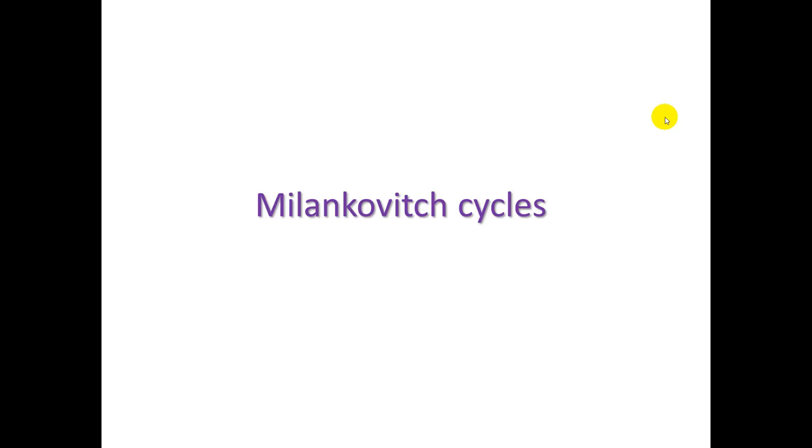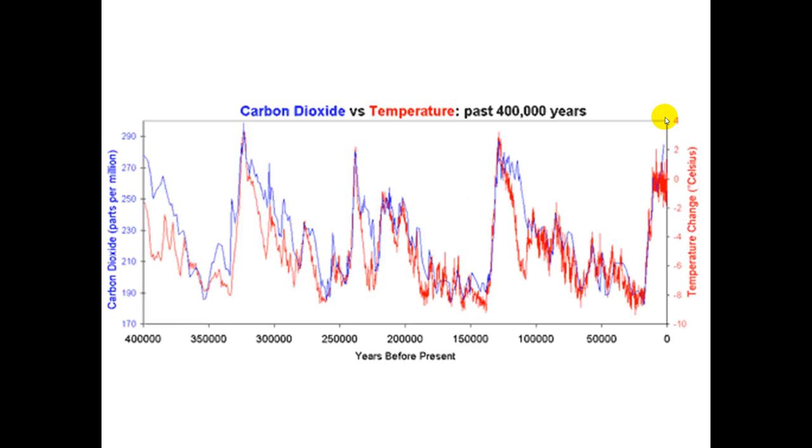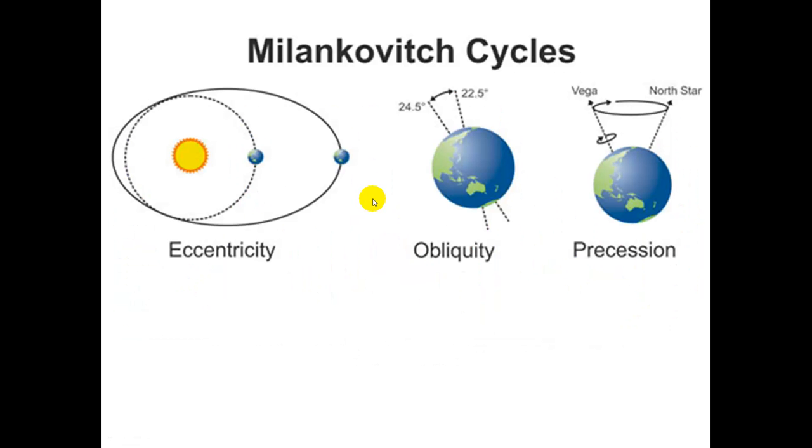This can be related to, partly, Milankovitch cycles. Which here we see long term, going back hundreds of thousands of years. Periodic trends between the carbon dioxide level and the temperature, they correlate to each other. And the Milankovitch cycles, there are three things happening here. The orbit is not perfectly elliptical. There are times when the earth is experiencing more time closer to the sun. And the axis does change its tilt. It becomes sometimes more tilted, and then maybe 10,000 years later, less tilted. And it also spins like a top, very slowly. Every 20,000 years or so, it completes a cycle.